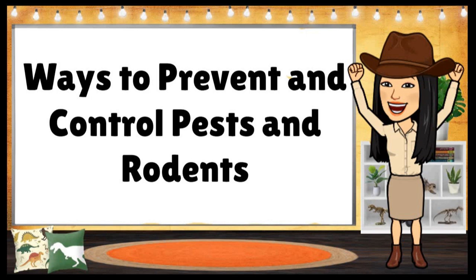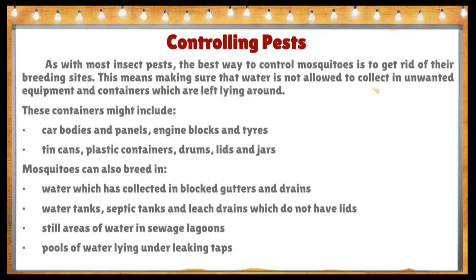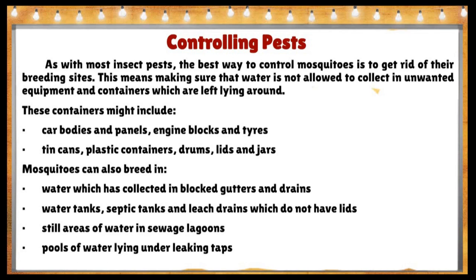Here are the ways to prevent and control pests and rodents. As with most insect pests, the best way to control mosquitoes is to get rid of their breeding sites. This means making sure that water is not allowed to collect in unwanted equipment and containers left lying around, such as car bodies, engine blocks, tires, tin cans, plastic containers, drums, lids, and jars.